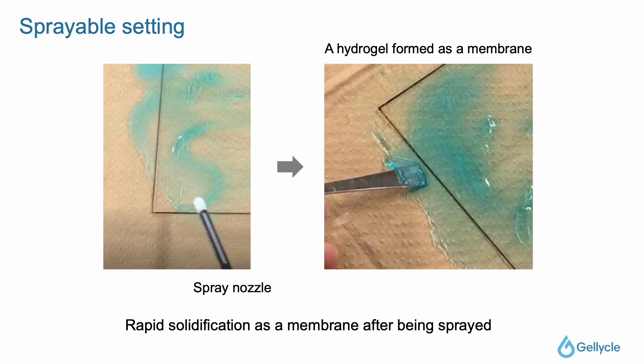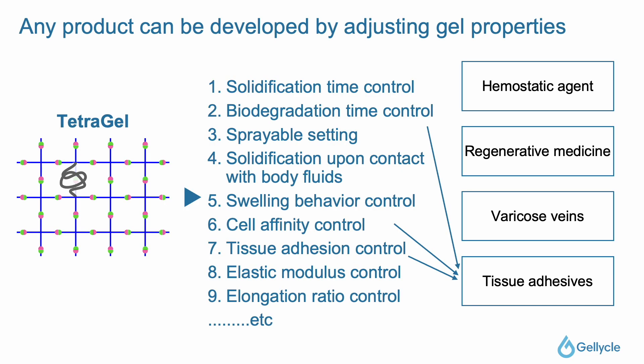It is also possible to form a uniform film using a spray, and in this way, every possible factor can be controlled at will. By using these different properties of hydrogels, we are developing a variety of medical products — for example, hemostatic agents and scaffolds for tissue reconstruction. We can also make devices to treat varicose veins and adhesives. Our company is unique in that we develop each product by properly utilizing the performance of the gel.